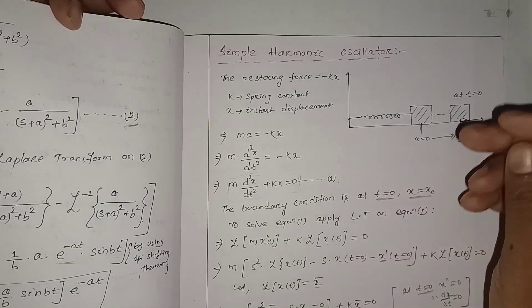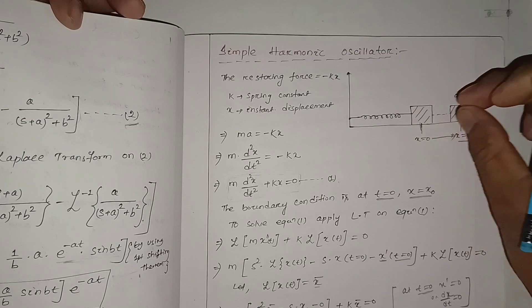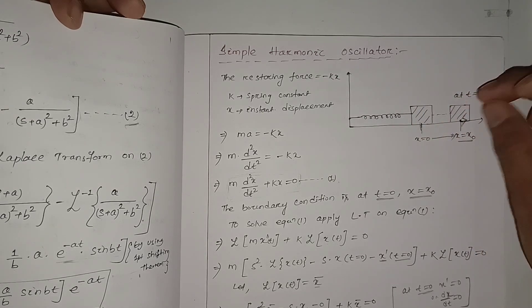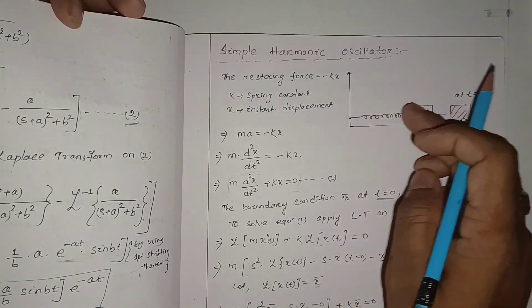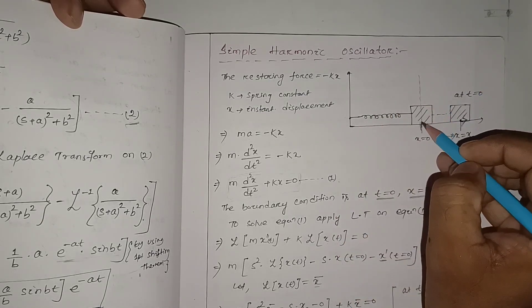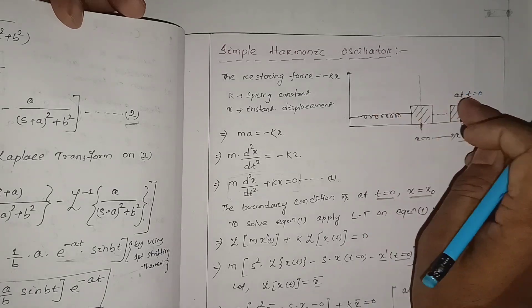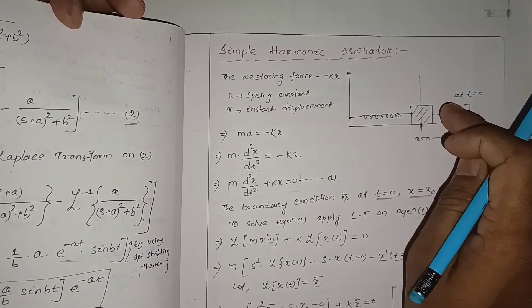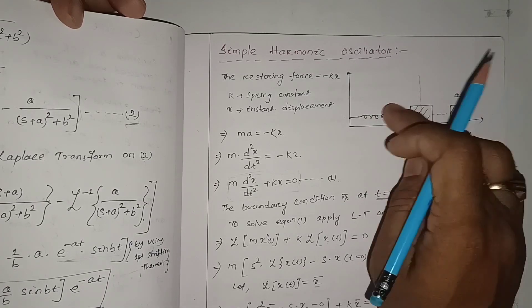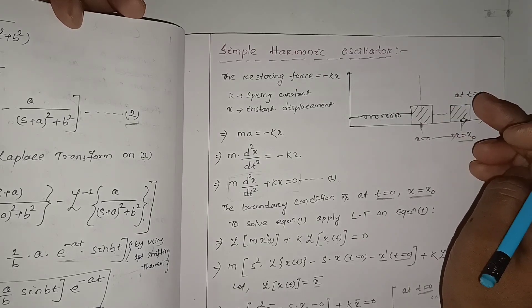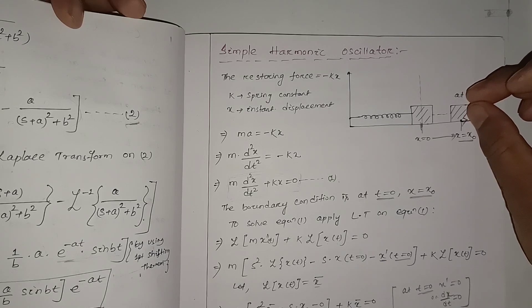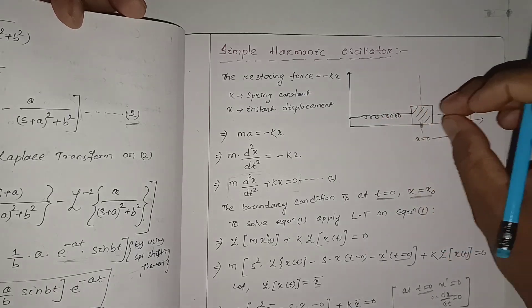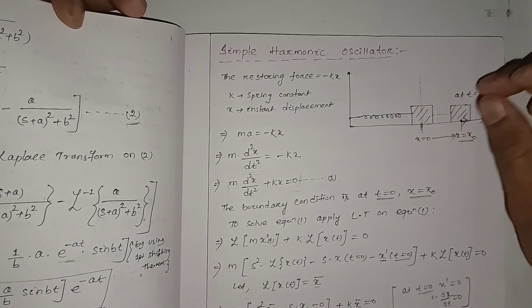This is a simple design of a simple harmonic oscillator — this is a spring and this is a mass. If I drag this mass up to a certain distance x equal to x₀ and then release it, it will oscillate about its mean position. Without friction it will oscillate continuously, due to the restoring force. Whatever work is done at the time of dragging, that energy will be stored, and due to the restoring force it will oscillate about this mean position.